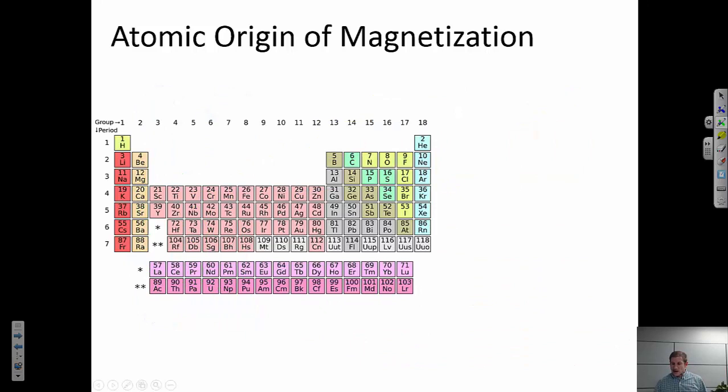So let's look at a general periodic table. Remember I told you that we need to have unpaired electrons to get this magnetic contribution. First of all, the noble gases are never going to have a residual magnetic moment because they're always closed shell. You never have unpaired electrons.